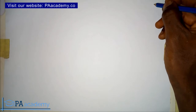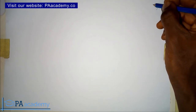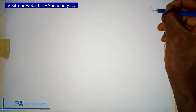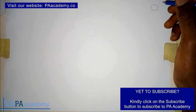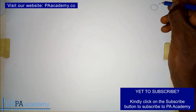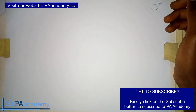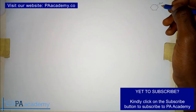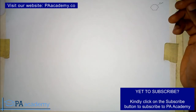Hello everyone and welcome to PA Academy. In this video I'm going to be showing you how to draw a regular hexagon when given the length of one of the sides. A regular hexagon has six sides and all the sides are equal. In this video I'm going to be taking the sides to be five centimeters. Irrespective of the length of the side you are given, just know that the steps are still the same.